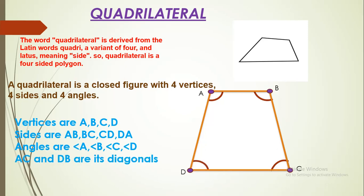And AC and DB are its diagonals. The line segment joining opposite vertices is called a diagonal. So, AC and DB are its diagonals.